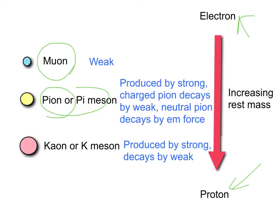And then we have the kaon which is bigger again. This also can be positive, negative or neutral. It has a greater mass than the pion and still less mass than the proton.